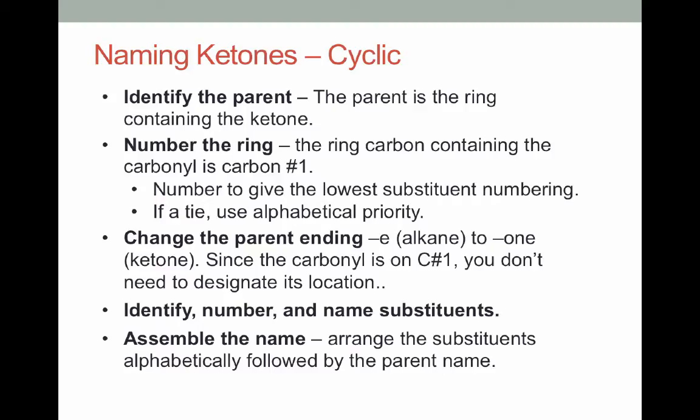If it's a cyclic ketone, it's a little different than the aldehydes, because with an aldehyde having that hydrogen on it, it couldn't be directly embedded in the ring. But a ketone can be directly on the ring, or directly part of the ring. So what we're going to do is we're going to identify the parent, and the parent's the ring that contains that ketone carbonyl. We'll number the ring, and we'll start by giving the carbon containing the ketone the number 1 designation, and then we'll number around the ring to give the lowest possible substituent numbering. And we'll see if there's a tie, we'll switch to alphabetical priority. Just like before, for our parent, we'll change the -e to -one. And we don't really need to designate the position of the ketone, because it's always carbon 1 in a ring. From there, we'll identify our substituents and assemble the name.